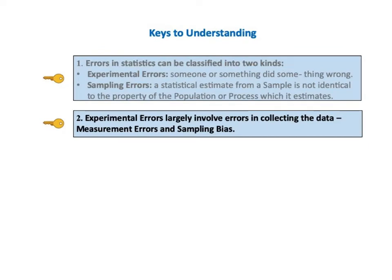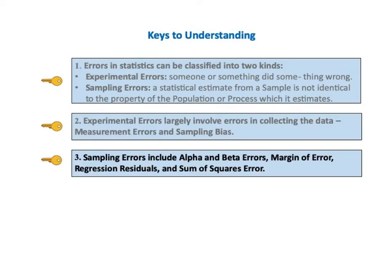KTU number two says experimental errors largely involve errors in collecting the data — measurement errors and sampling bias. Key number three says sampling errors include alpha errors and beta errors, margin of error, regression residuals, and sum of squares error.